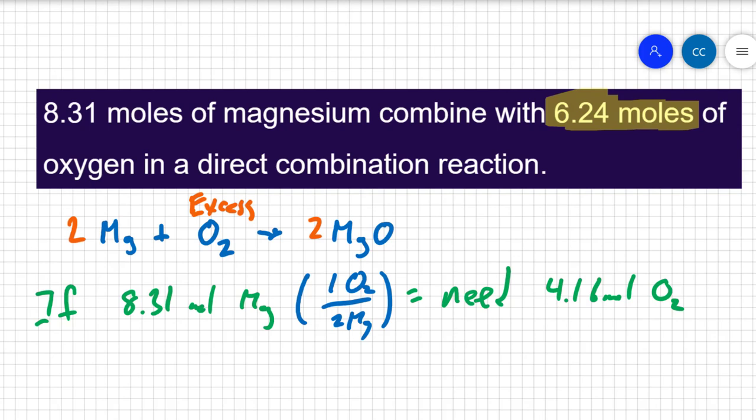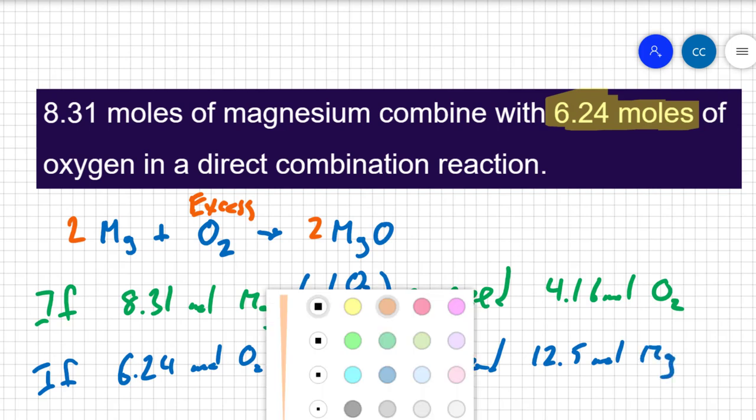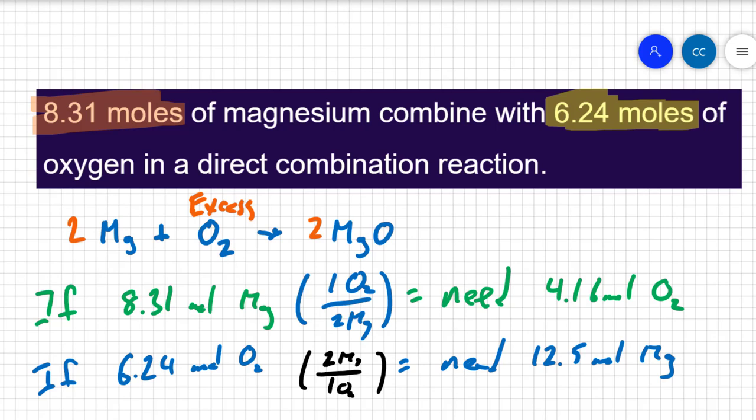And we can do this the other way. What if I said, if I have 6.24 moles of oxygen, the amount that I'm given, then how much magnesium would I need? Well, the magnesium is in two magnesium for every one oxygen, correct? That's a two to one ratio. So that means you would need 12.5 moles of magnesium. You don't have 12.5 moles of magnesium. You have 8.31 moles of magnesium. You don't have enough magnesium to react with all of the oxygen that's given.